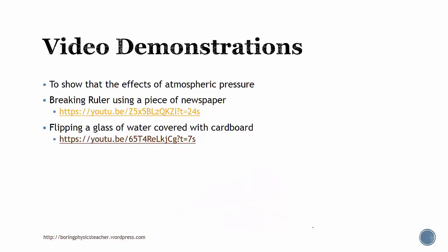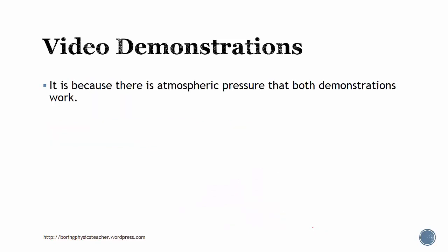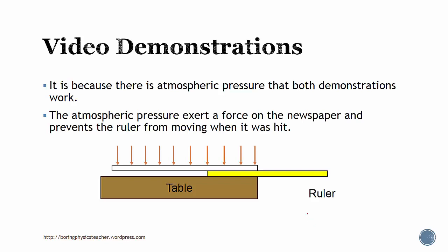Why is this happening? It is because there's atmospheric pressure around us that makes both demonstrations work. In the first demonstration, the atmospheric pressure is exerting a force on the newspaper and prevents the ruler from moving when it is hit. The pressure acting on the newspaper holds the ruler in place so that when the force hits this part, this part acts as the pivot and this will break.